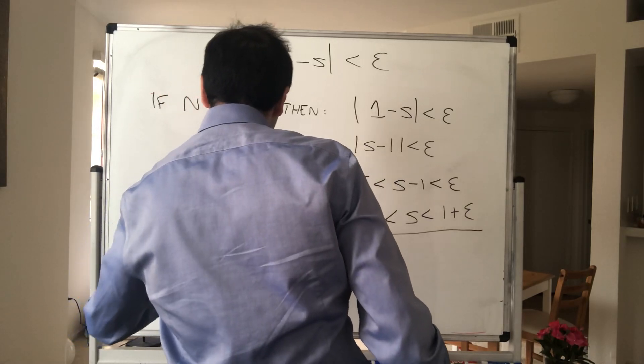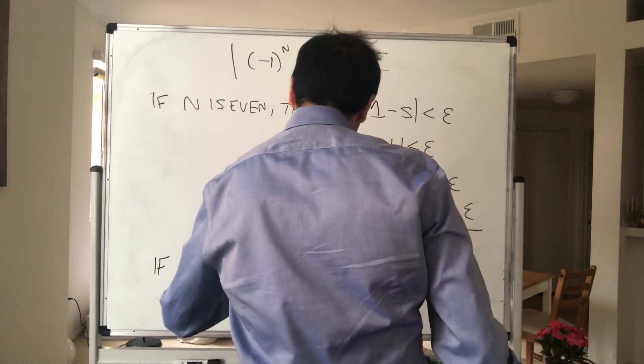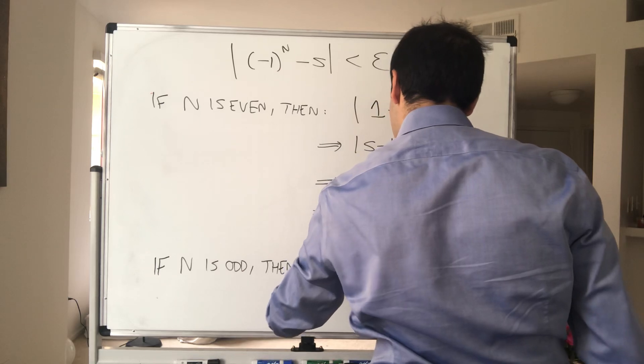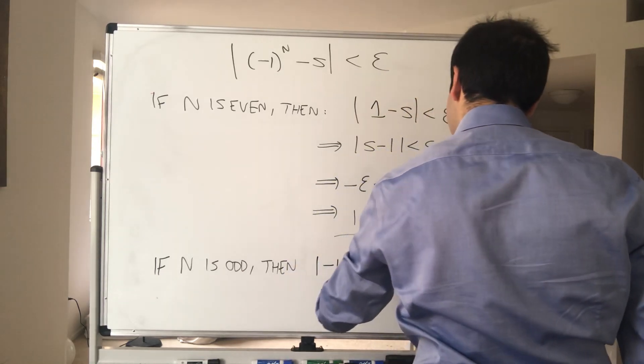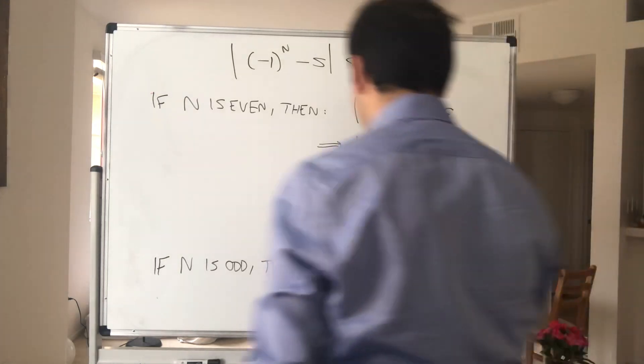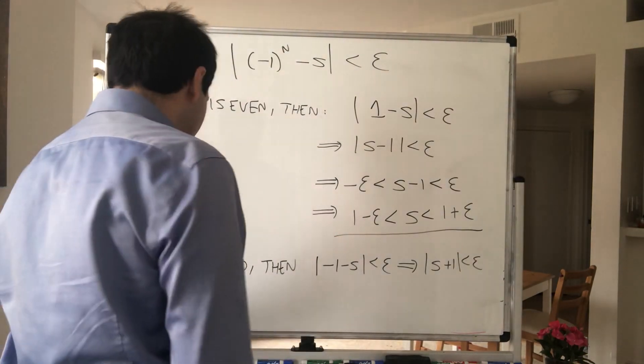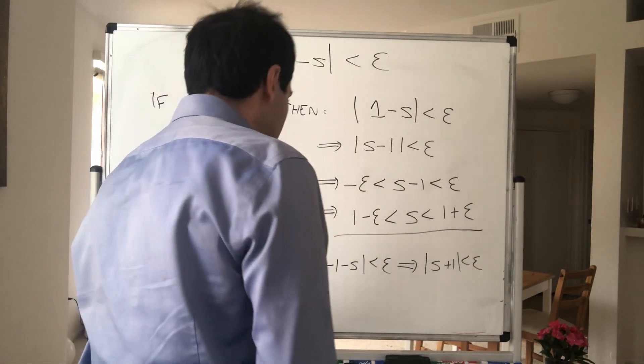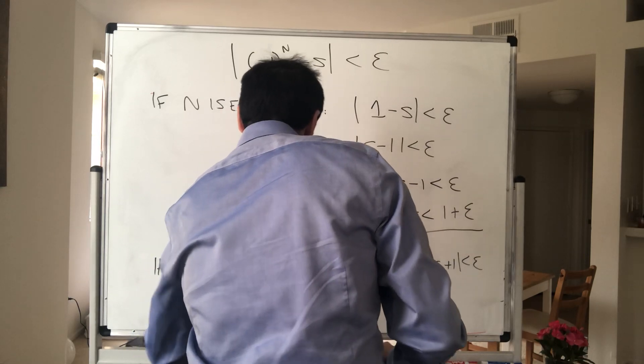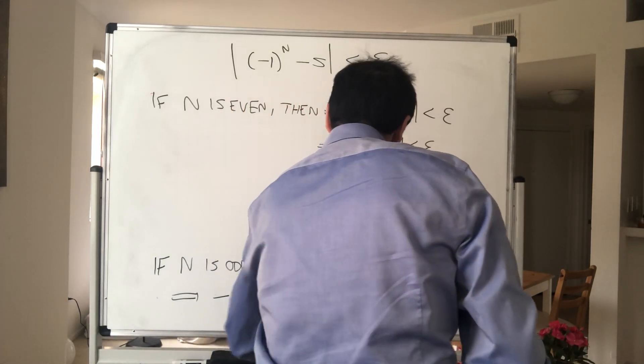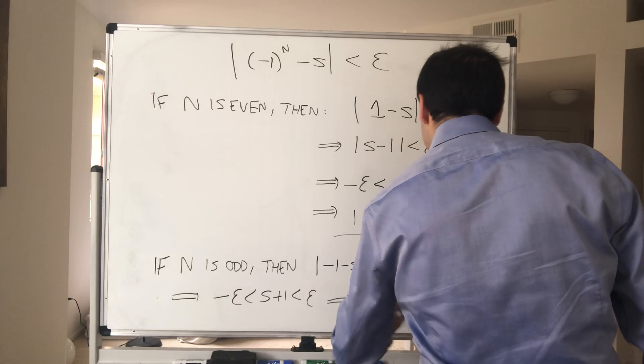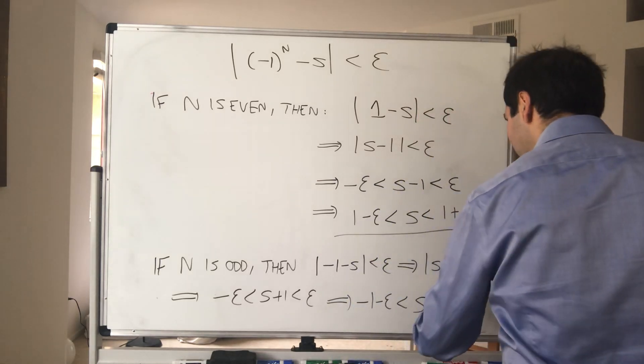Now, if n is odd, then what we get, this becomes -1. |-1 - s| < epsilon. And that's the same thing as saying |s + 1| < epsilon. So s + 1 is between -epsilon and epsilon. And in particular, what we have is s is between -1 - epsilon and -1 + epsilon.